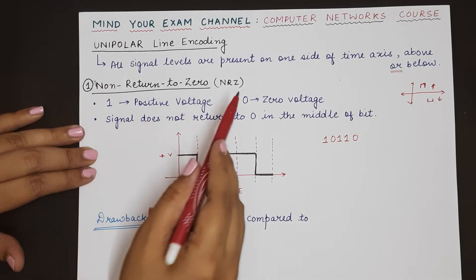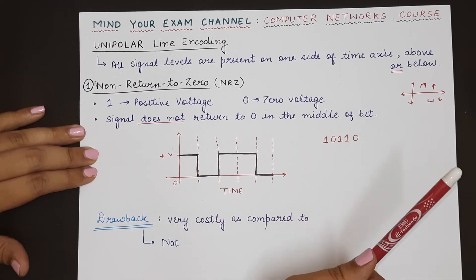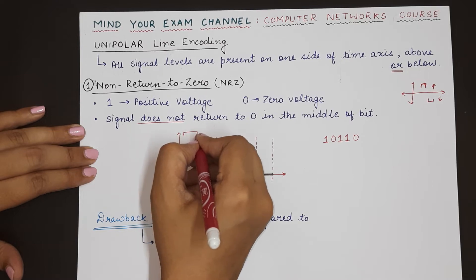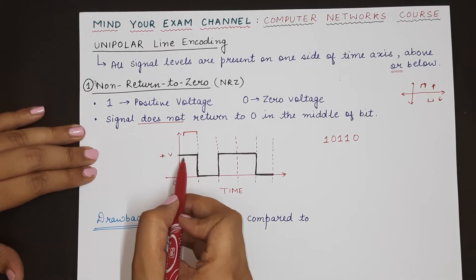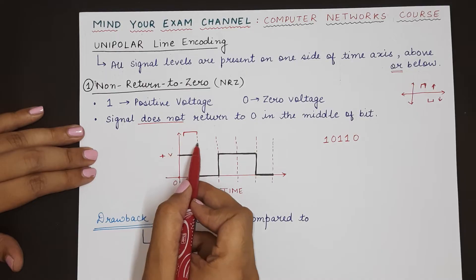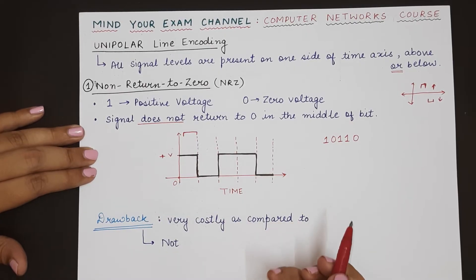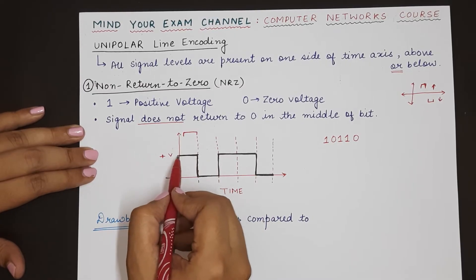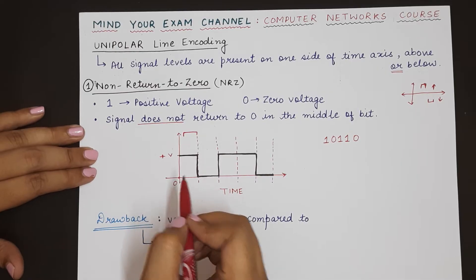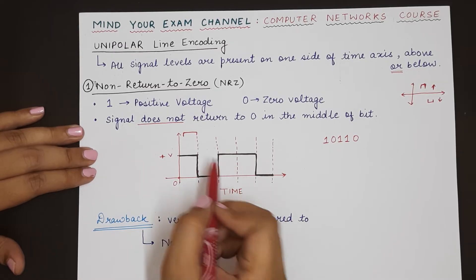NRZ means that the signal does not return to zero in the middle of a bit. If a signal element represents one bit, throughout the entire duration of that bit the level does not return to zero. In future line coding techniques you will see techniques that make the digital signal go down to zero mid-bit before starting the next bit, but in NRZ the level remains the same throughout the entire length of the bit.